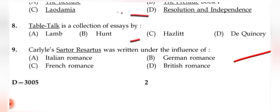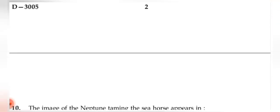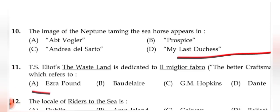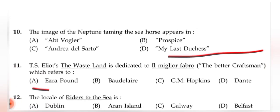Question 10: The image of Neptune taming the seahorse appears in (D) 'My Last Duchess.' Question 11: T.S. Eliot's 'The Waste Land' is dedicated to Ezra Pound — referred to as 'il miglior fabbro,' meaning the better craftsman — so the correct answer is (A) Ezra Pound.